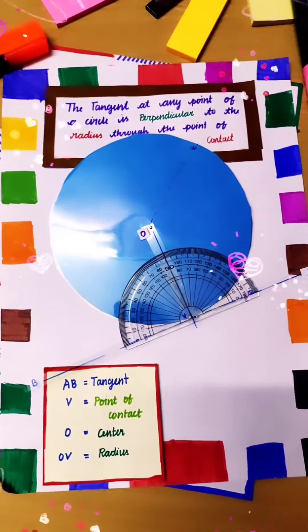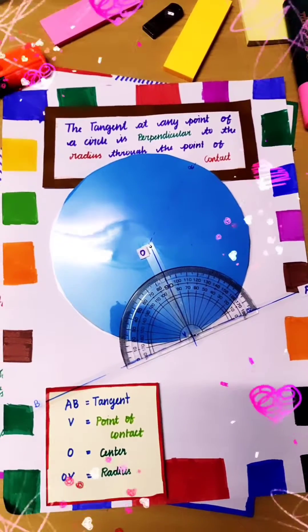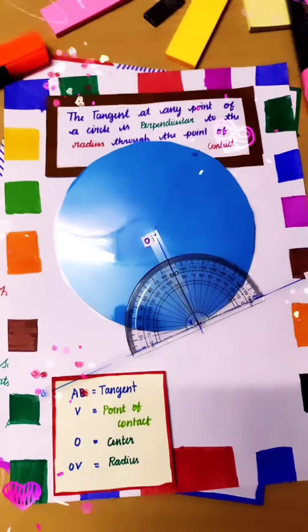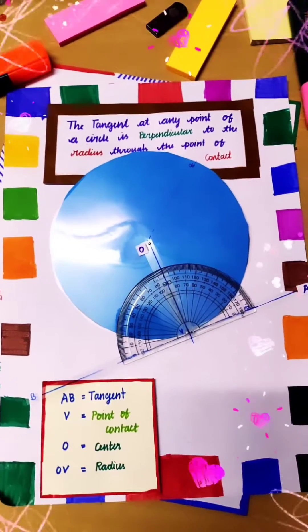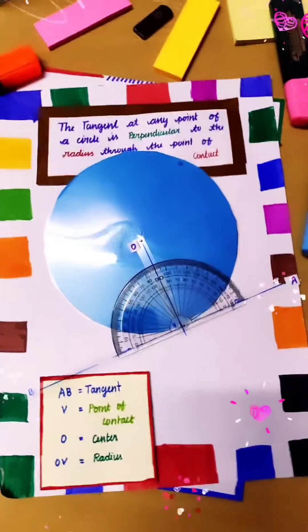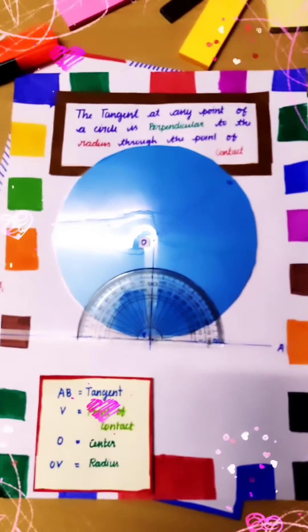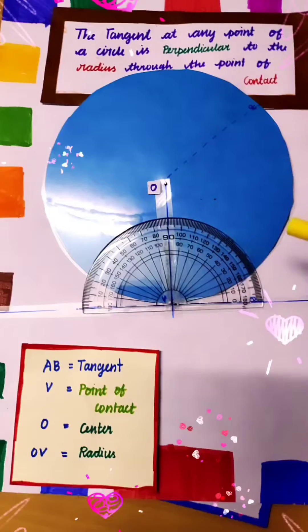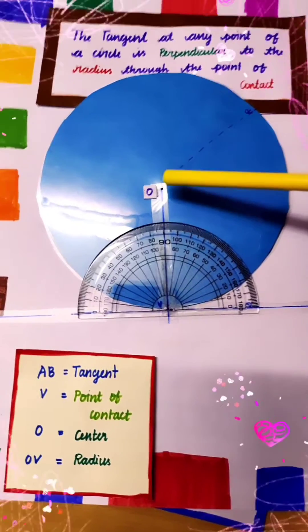Hello everyone. In this video, we'll be discussing how a tangent is perpendicular to the radius of a circle visually. Can you all see this circle? O is the point at the center of the circle.